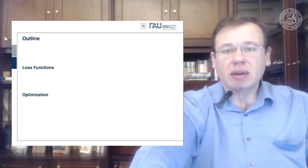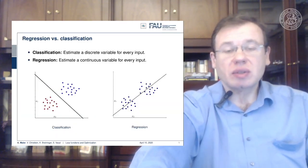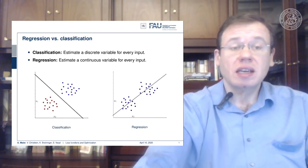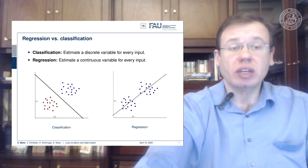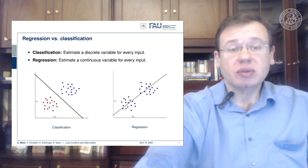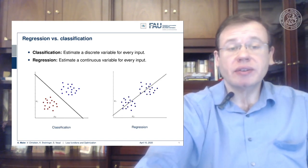Let's talk first about loss functions. Loss functions are generally used for different tasks, and the two most important ones that we are facing are regression and classification. In classification, you want to estimate a discrete variable for every input. This means that you want to essentially decide, in this two-class problem here on the left, whether it's blue or red dots.